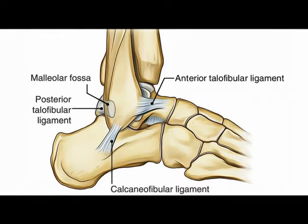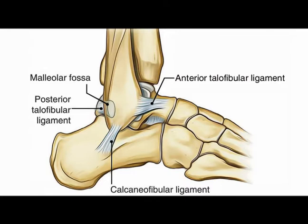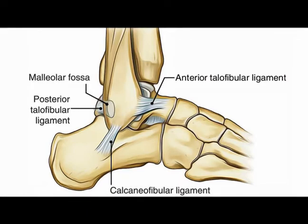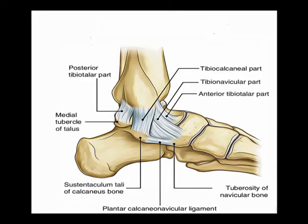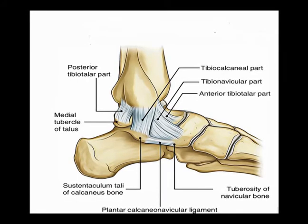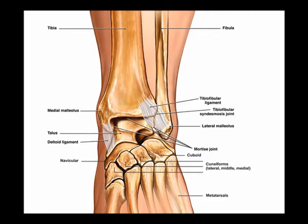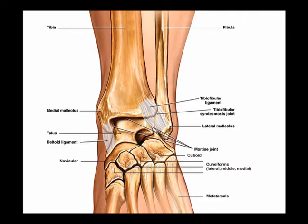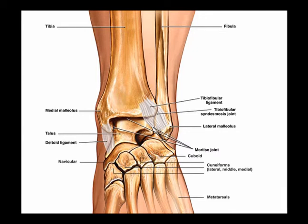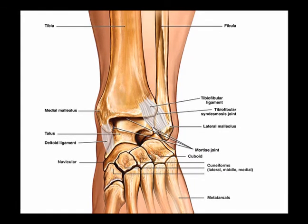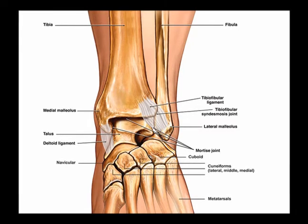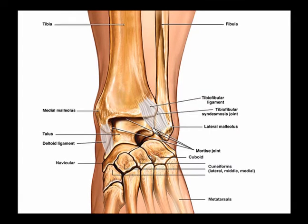The lateral ankle ligaments are located on the outside aspect of the ankle and are most commonly injured — about 80% of ankle sprains are lateral ankle sprains. The medial ankle ligaments are on the inside aspect of the ankle, making up about 10% of ankle injuries. The high ankle ligaments, known as the syndesmotic ligaments, are located above the ankle joint in the lower aspect of the lower leg, connecting the tibia and the fibula together.